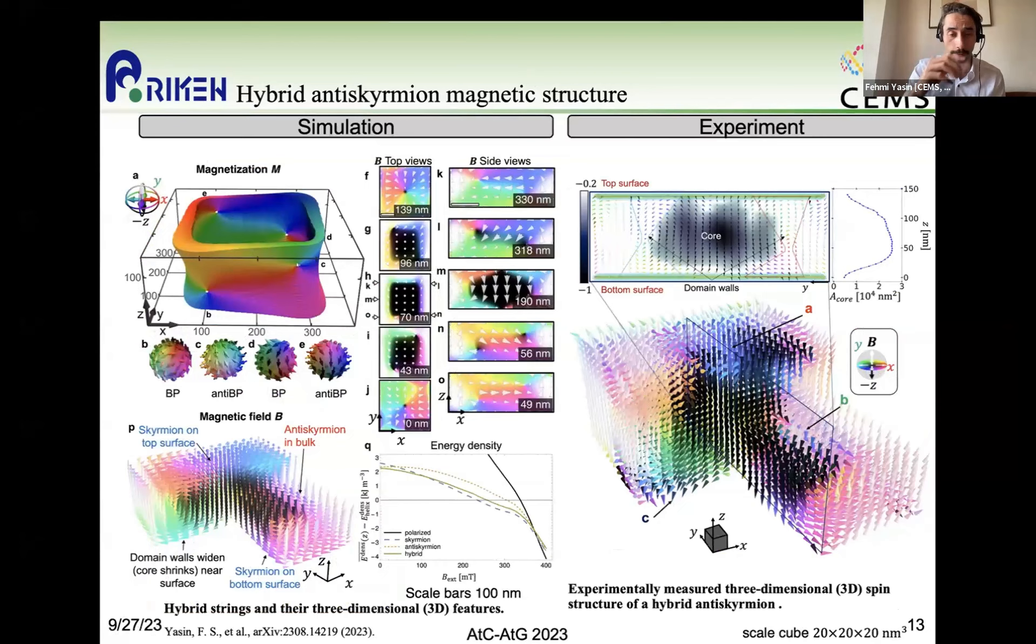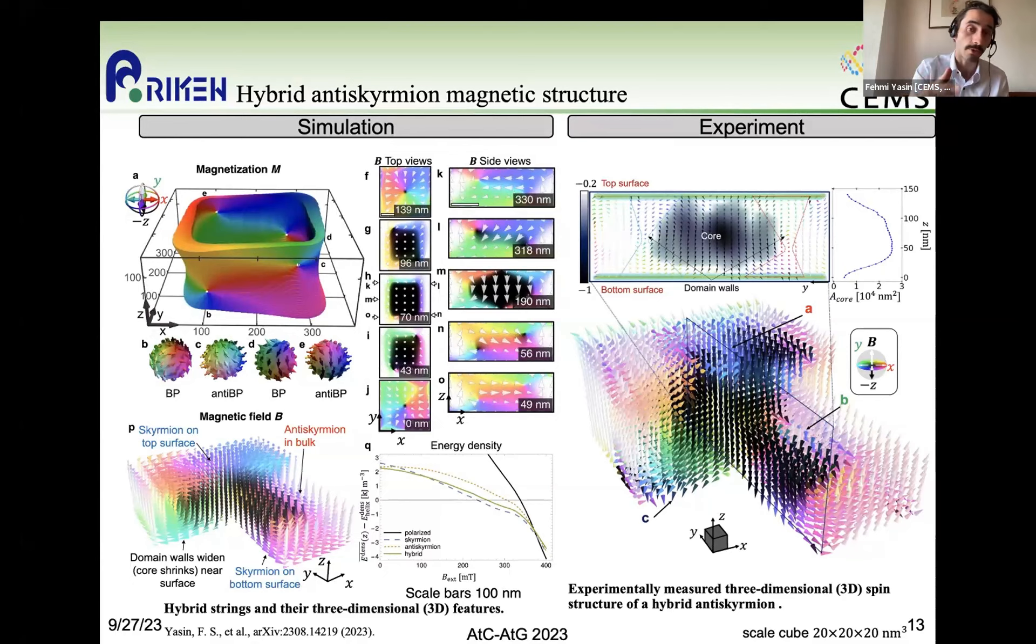And so now we turn to micromagnetic simulations performed in collaboration with my colleague, Dr. Jan Masell. And these micromagnetic simulations revealed that this hybrid topological string using the crystal properties that were already reported in the literature, we were able to find that these hybrid topological strings are actually the lowest energy non-trivial spin texture within this material. So it's lower energy than the skyrmion as well as the antiskyrmion state for a range of applied external magnetic fields, including zero field. And actually for all of the probed externally applied magnetic fields, this hybrid string spin texture is actually lower energy than the antiskyrmion spin texture.